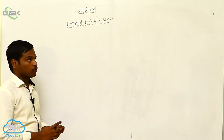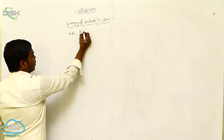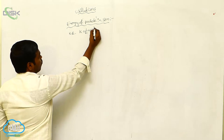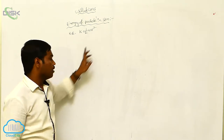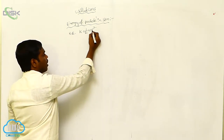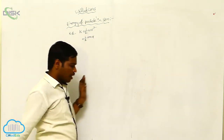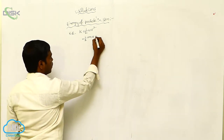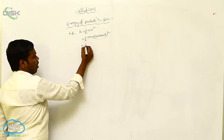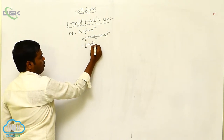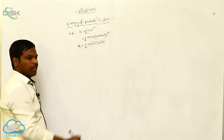For the particle executing simple harmonic motion, the kinetic energy of the particle is K equals half mv squared. Here m is the mass and v is the velocity of the particle. Substituting v equals Aω cos(ωt), we get K equals half m A squared ω squared cos squared ωt. This is the kinetic energy value.